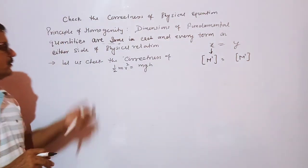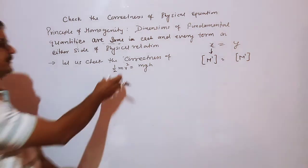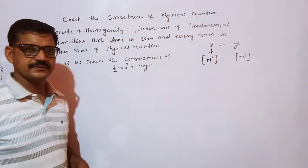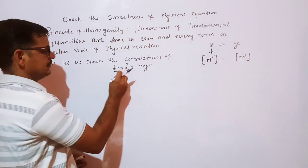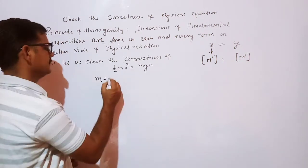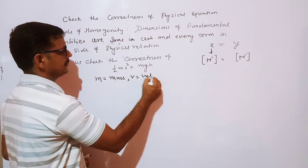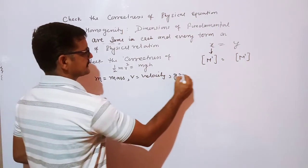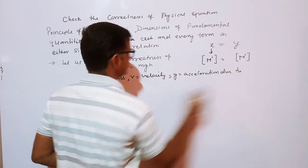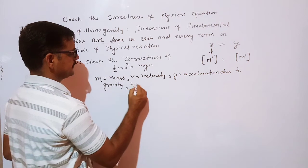Now let us check the correctness of the equation: half mv² equal to mgh. Here, half mv² is the kinetic energy and mgh is the formula of potential energy. In this equation, m is the mass of the body, v is the velocity, g is the acceleration due to gravity, and h is the height.